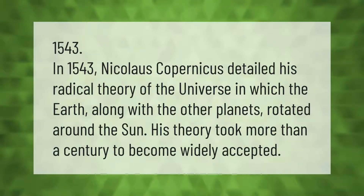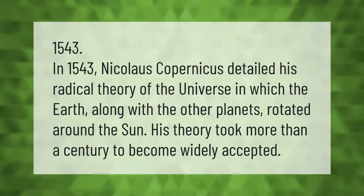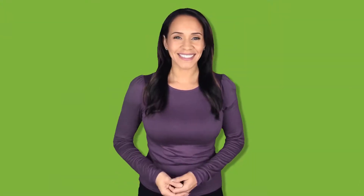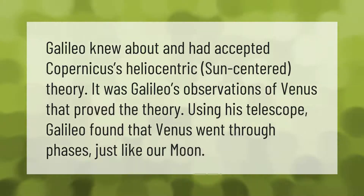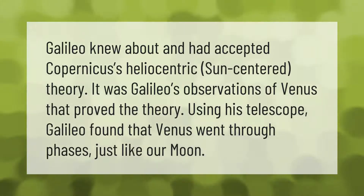In 1543, Nicolaus Copernicus detailed his radical theory of the universe, in which the earth along with the other planets rotated around the sun. His theory took more than a century to become widely accepted. Galileo knew about and had accepted Copernicus's heliocentric, sun-centered theory. It was Galileo's observations of Venus that proved the theory — using his telescope, Galileo found that Venus went through phases just like our moon.